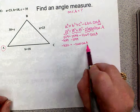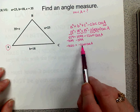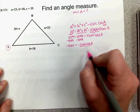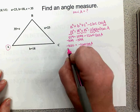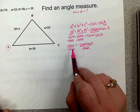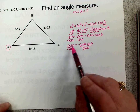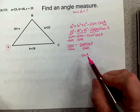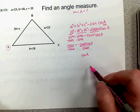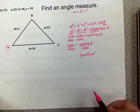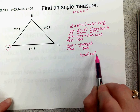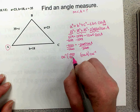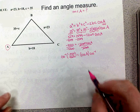To isolate cosine of A, divide both sides by negative 1,260 — remember, this is multiplication in front of cosine, so we undo it with division, not addition. Keep it as a fraction rather than a decimal to avoid rounding too early. To get angle A, apply the inverse cosine: A equals inverse cosine of negative 1,020 divided by negative 1,260.